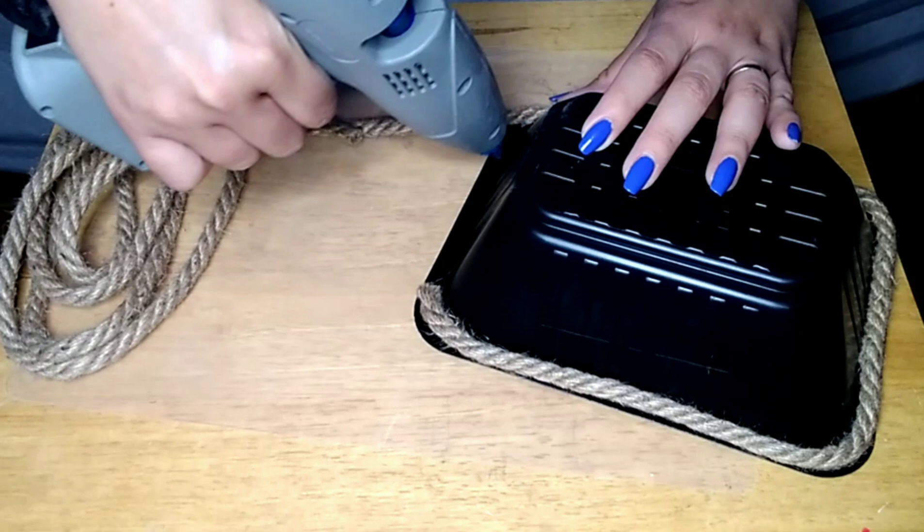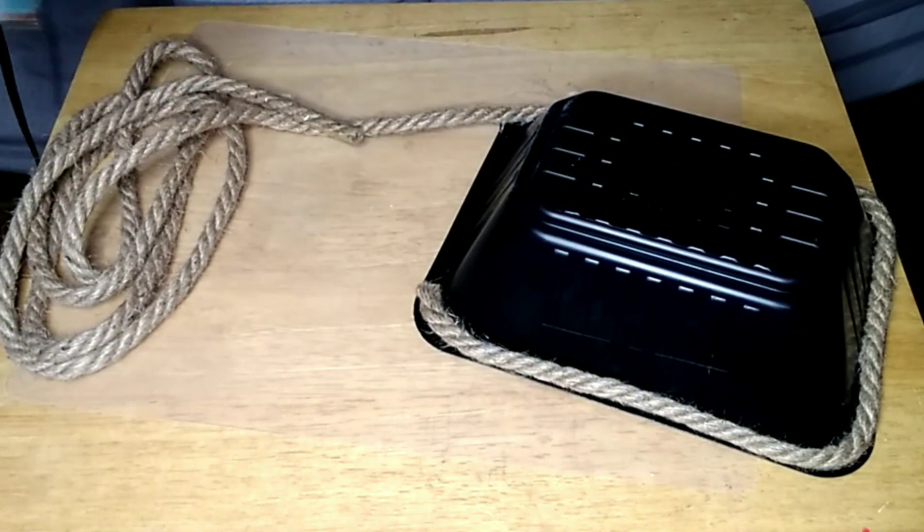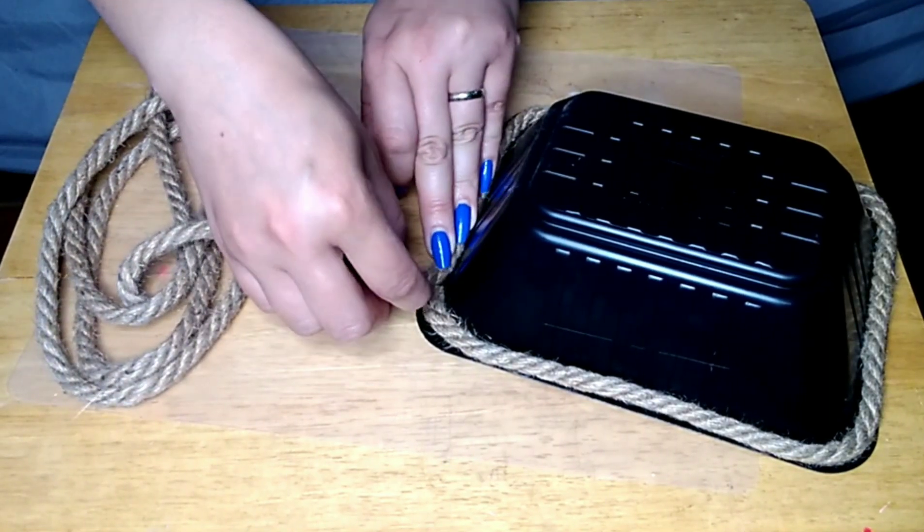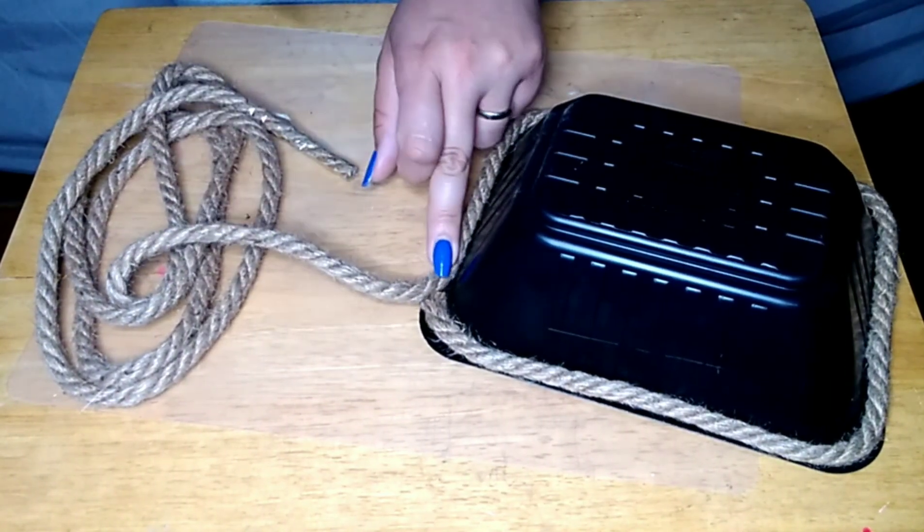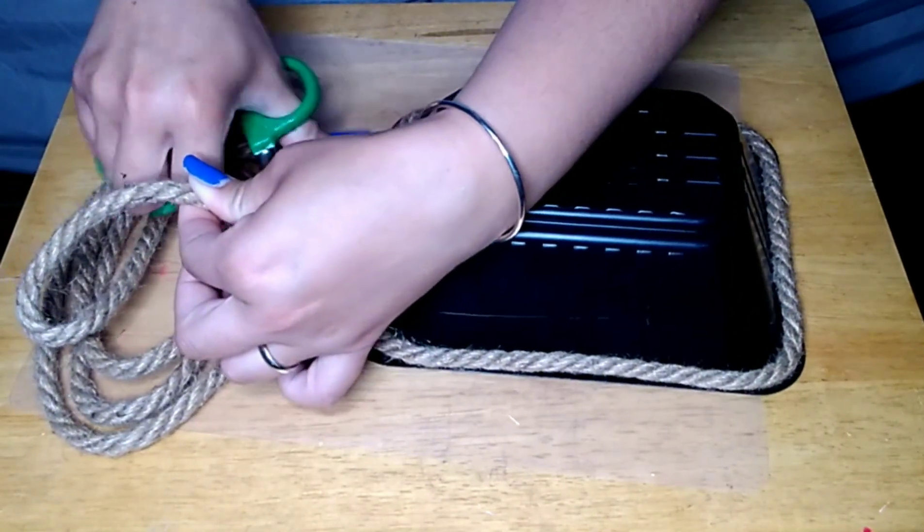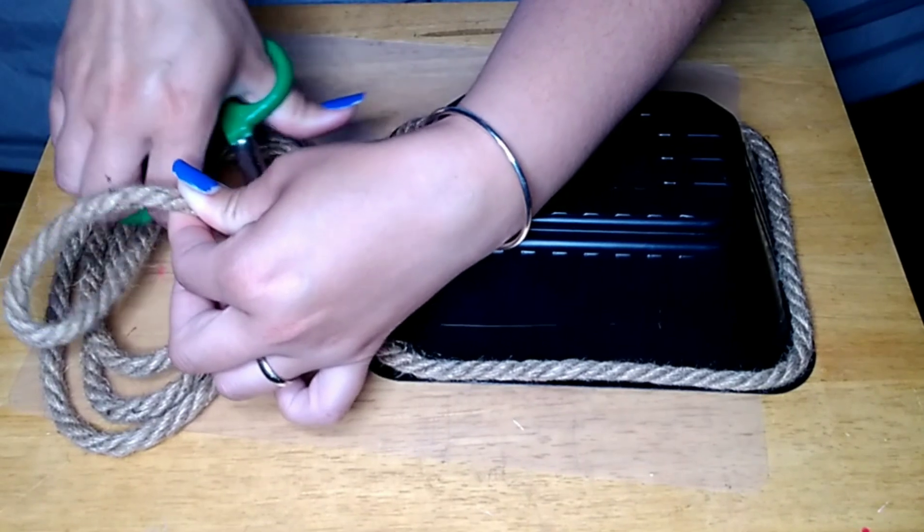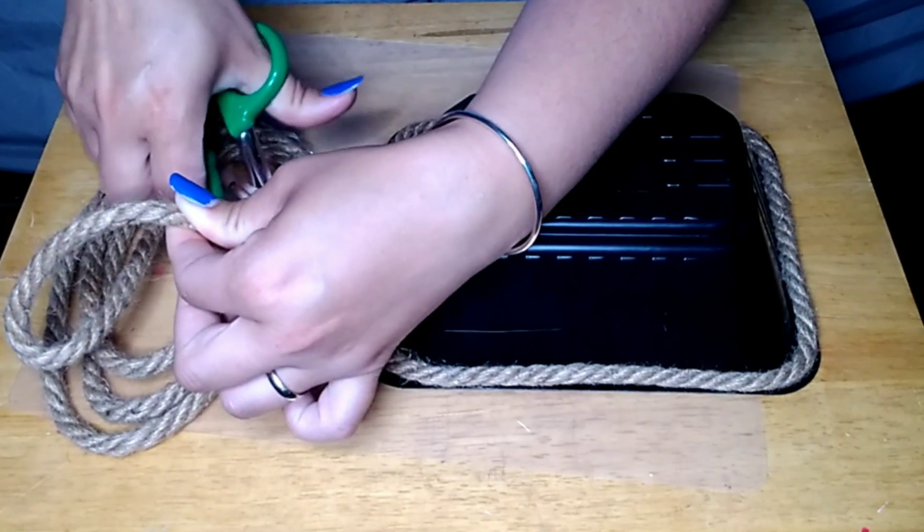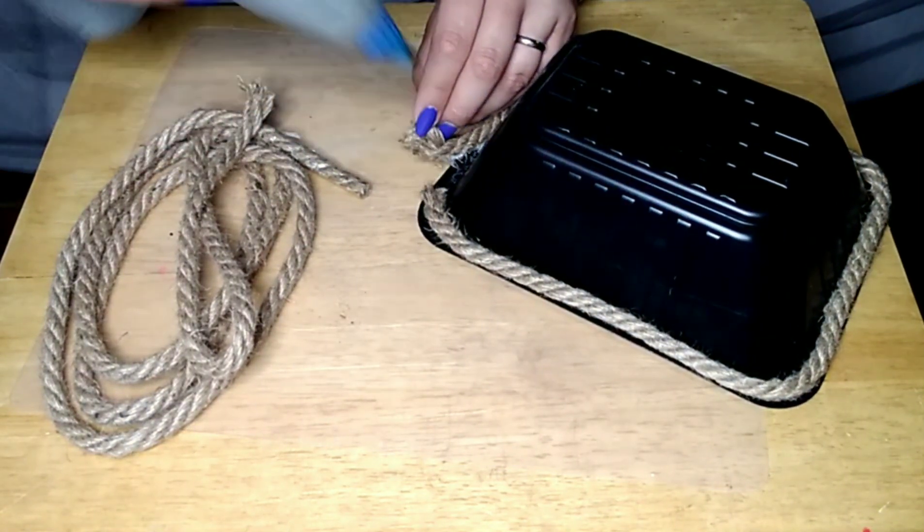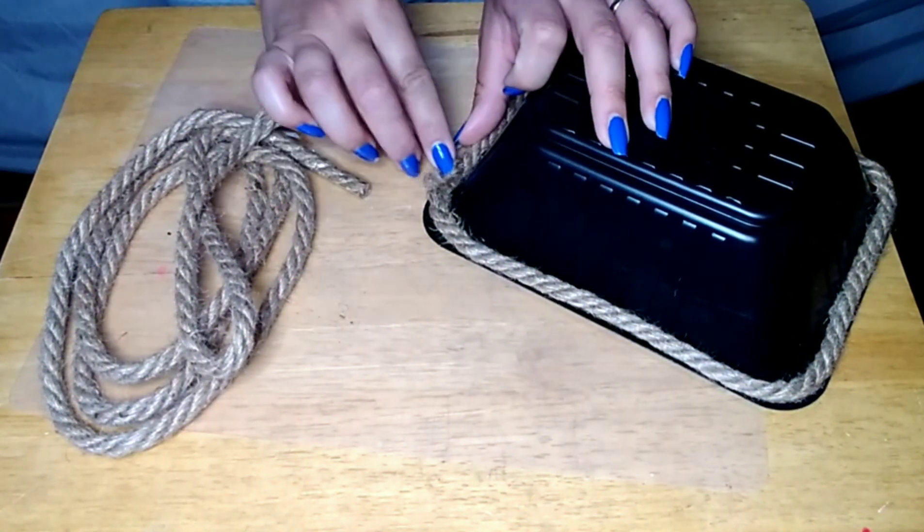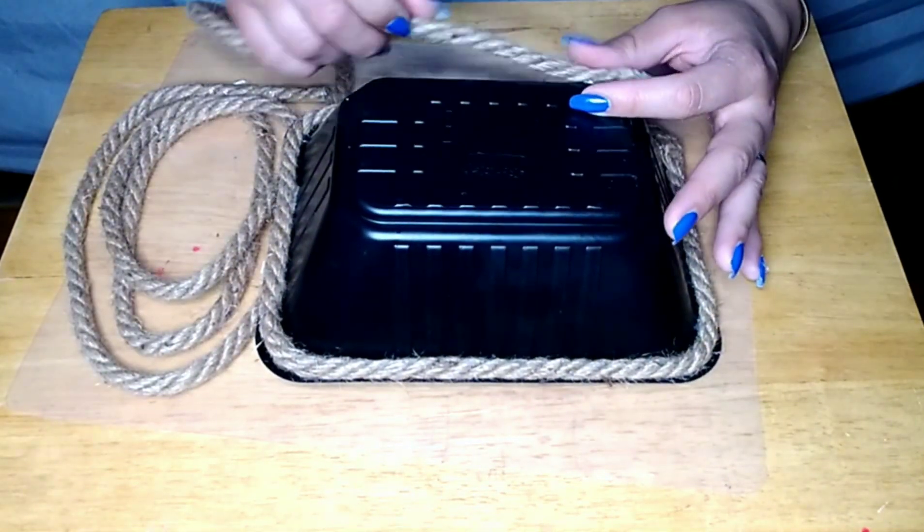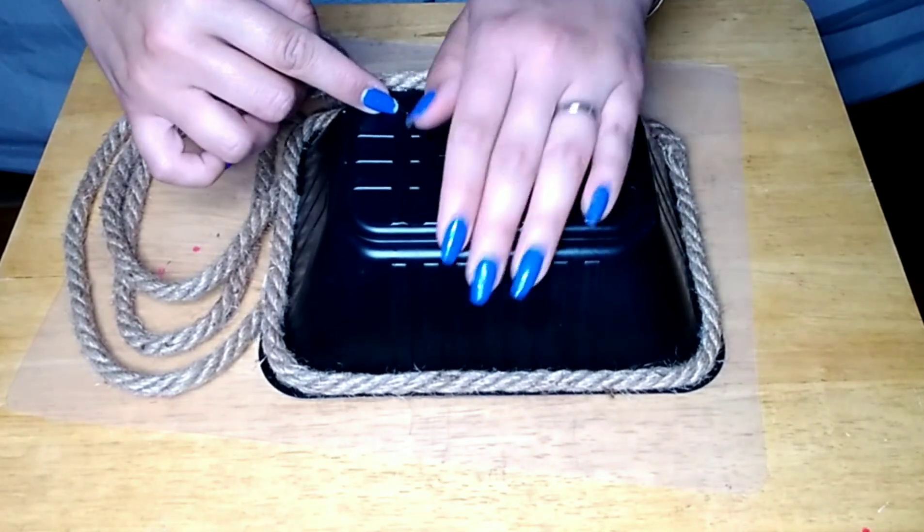And initially I was going to cover that whole bottom with rope or with the jute twine. And I didn't want to cover up that black. I kind of liked how that black was looking in contrast to the rope. So I decided to just kind of decorate the little tray with the rope instead of covering the whole thing with the rope. And I really liked the way that it turned out. And you can use it for so many different things. You can make it into a little planter. You can use it for fruit, which is how I used it.